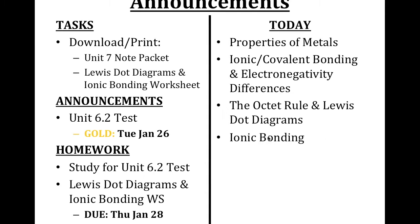Here's a look at what we're going to be doing today. It's going to be a little bit longer than what we did the other day, which was pretty short. We are going to look at the properties of metals and how they're formed. We're going to introduce ionic and covalent bonding and look at how we can relate electronegativity differences to those bonds. Then we are going to talk about the octet rule, Lewis dot diagrams, and ionic bonding.